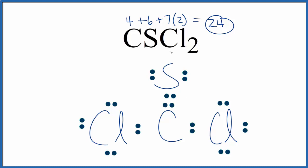If you calculate the formal charges, you'll see that the formal charges on each atom are 0. If you had the double bond on the chlorine instead, you would have non-zero formal charges. So this is the best structure for CSCl2.